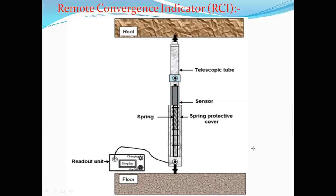The RCI is used to measure deformation of the overlying strata in a remote location — where mining activity is carried out but not currently active — to find out how exactly the strata is behaving. The instrument is attached to the roof and floor at anchoring points. The adjustable inner telescopic tube can be raised or lowered to fit the exact height of the roadway.